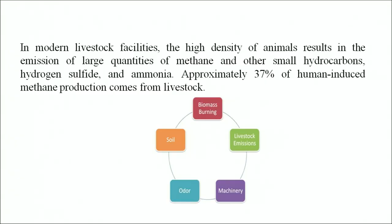In modern livestock facilities, the high density of animals results in the emission of large quantities of methane and other small hydrocarbons, hydrogen sulfide and ammonia. Approximately 37 percent of human-induced methane production comes from livestock. As discussed in lesson 10, module 4 of environmental science, serious ecological implications and health risks are also associated with industrial air pollution. The fast depleting ozone layer and its implications on human health, as well as the greenhouse effect, have been discussed in detail in lesson 10.